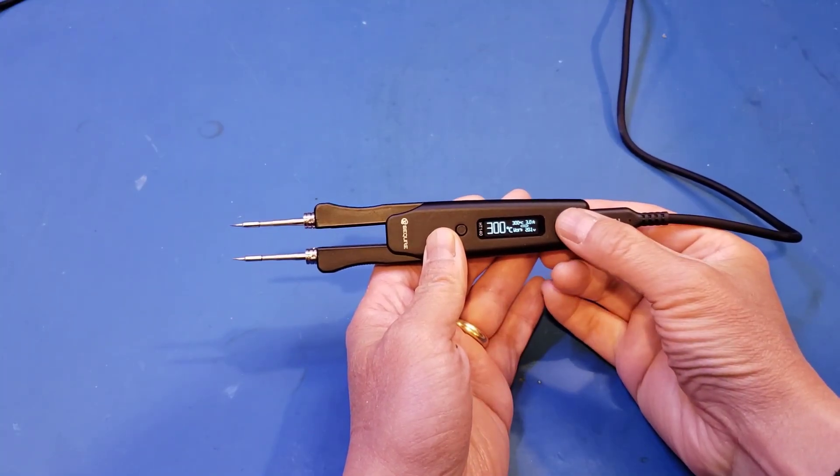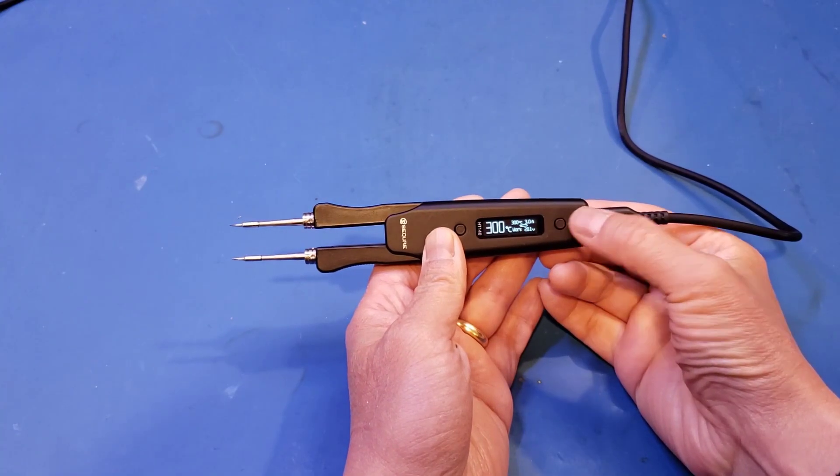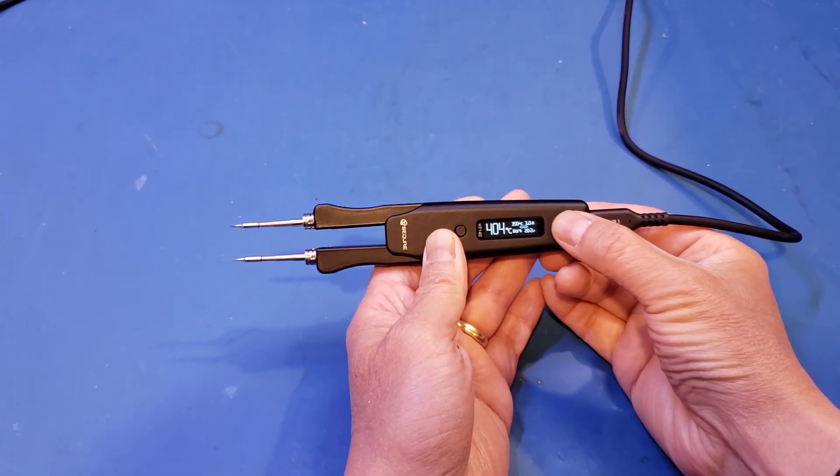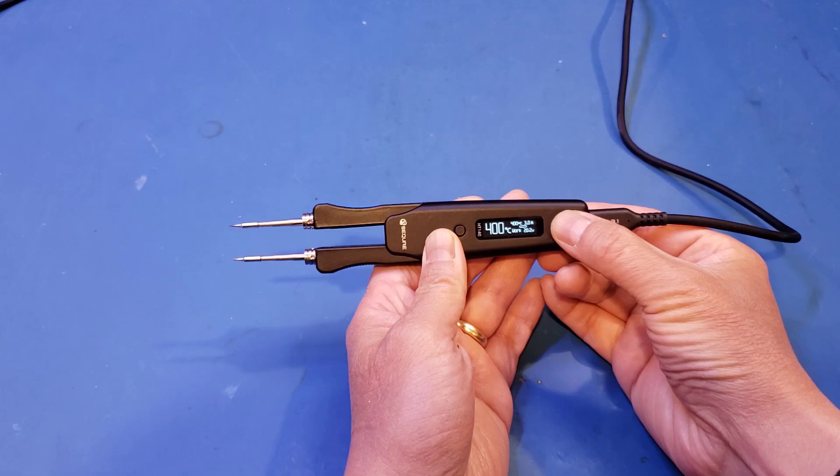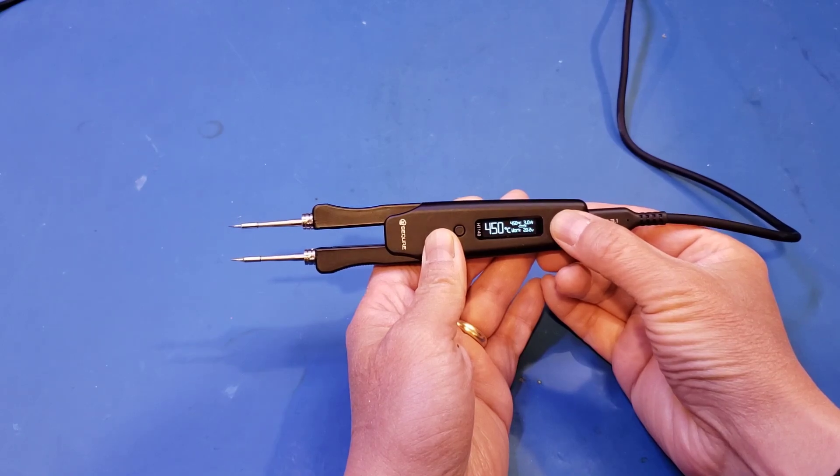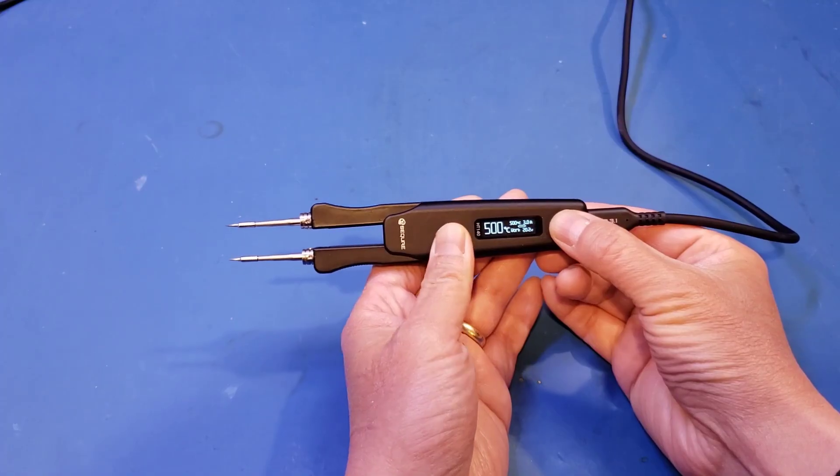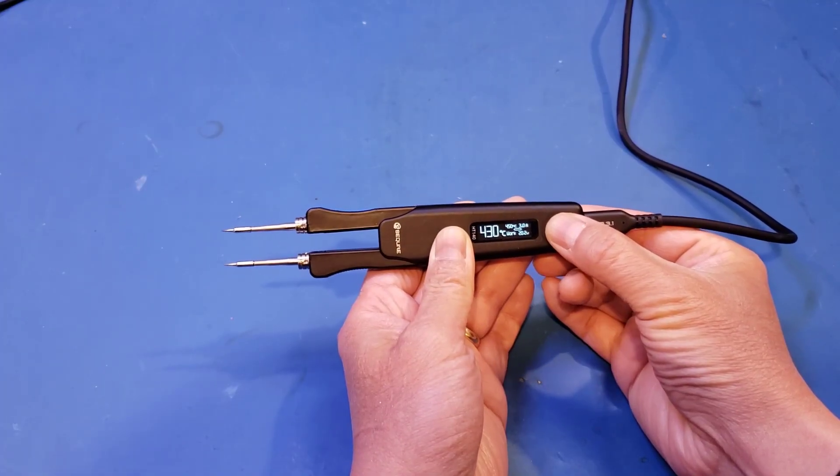And I believe we can cycle through the working temperature using this button here. You can see that 350, 400, 450, 500. And these are some of the default values.